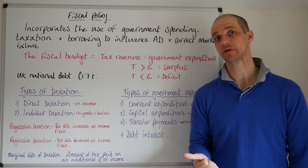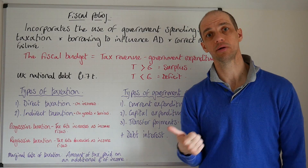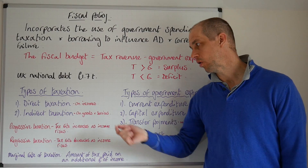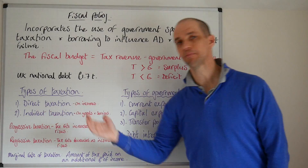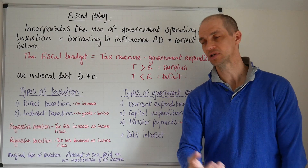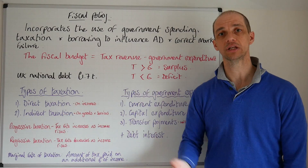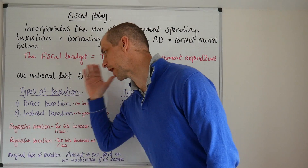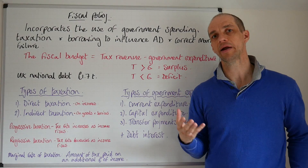Then we've got indirect taxation. This is taxation on goods and services. Examples here would foremost include VAT — that value added tax set at 20% on non-essential items. But there's also other taxation imposed on, say, road tax, then added taxes to petrol, tobacco, as well as alcohol, sugary drinks, etc. So types of taxation is another important concept to be aware of.